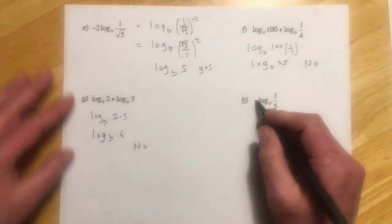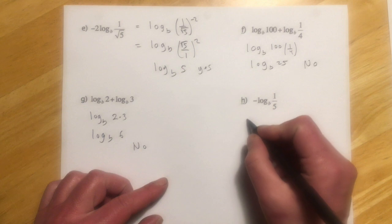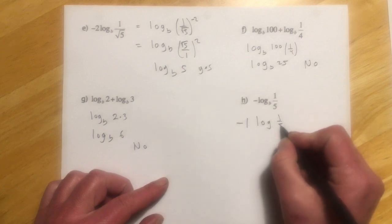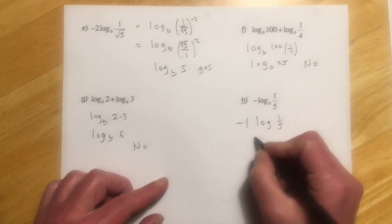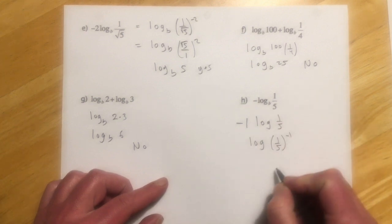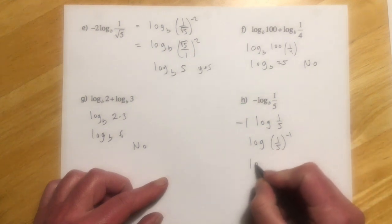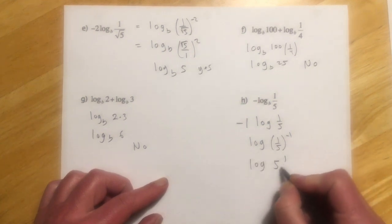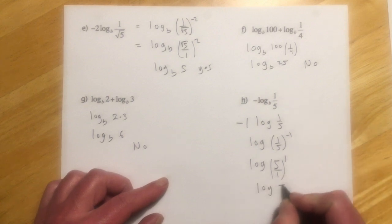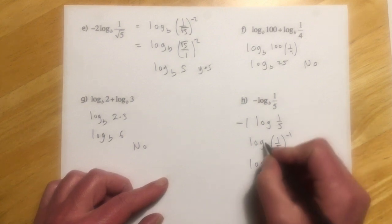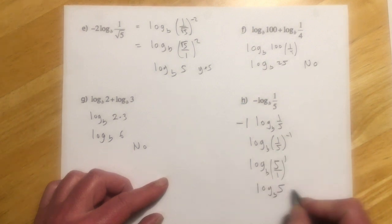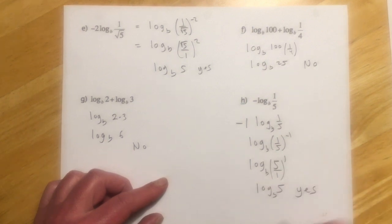For part h, the negative sign in front acts like negative 1 as an exponent. So log of (1/5) to the negative 1 is the same as log of 5 over 1, which is log base b of 5. So that one is a yes.